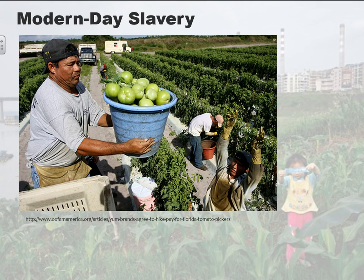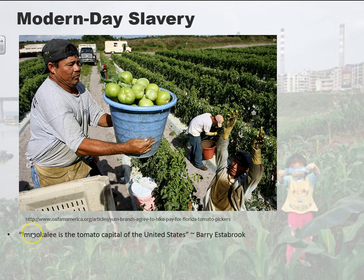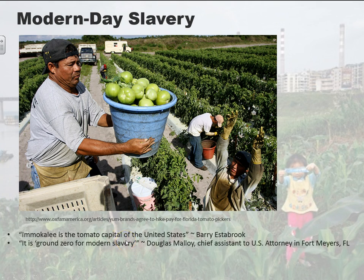Moving on to a different aspect of sustainability in food — there was that article about the slave trade in Florida. It may sound ridiculous, but it is true. Immokalee is a county in Florida; it's often referred to as the tomato capital of the United States. But it's also ground zero for modern slavery.